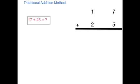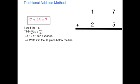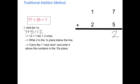This will be easier for when we solve the problem. Step 1 is to add the ones. So I'm going to add my ones place: 7 plus 5 equals 12. 12 equals 1 ten and 2 ones. Since 2 is in the ones place, you're going to write 2 in the ones place below the line. Since 1 is in the tens place, you're going to carry the 1 next door and write it above the numbers in the tens place.